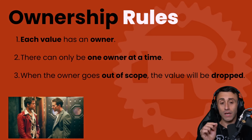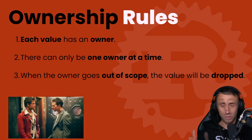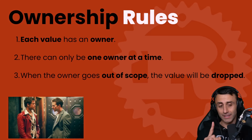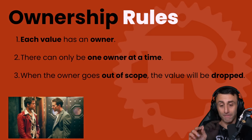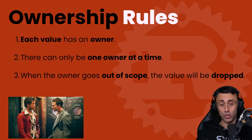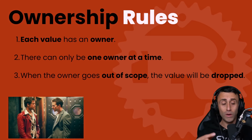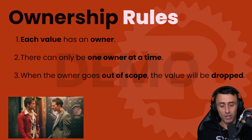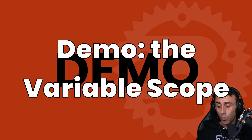The ownership rules are: number one, each value has an owner — there is no value without an owner; number two, there can only be one owner at a time; and number three, when the owner goes out of scope the value will be dropped by calling the drop function.